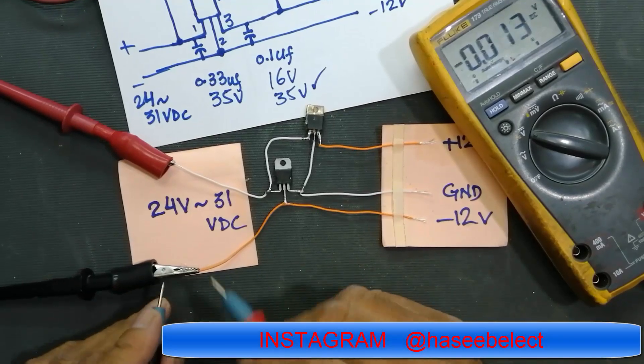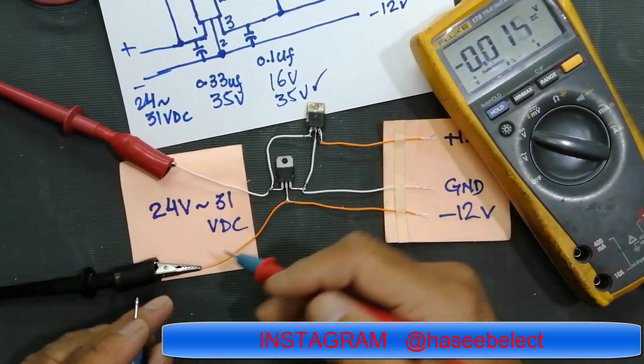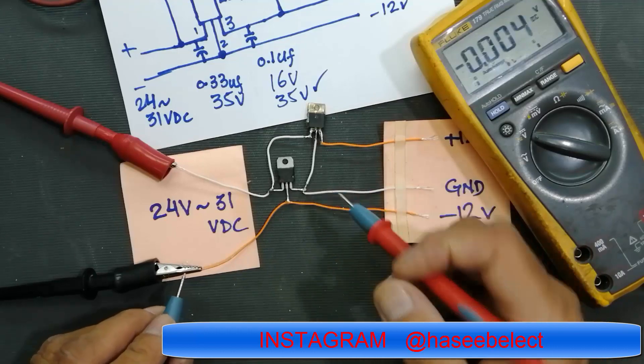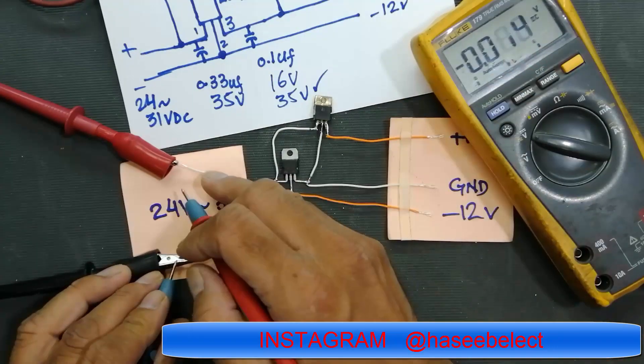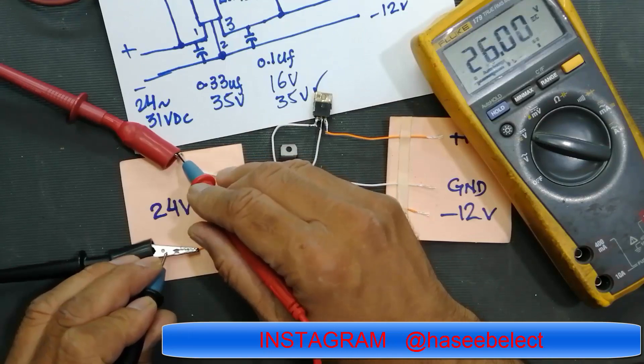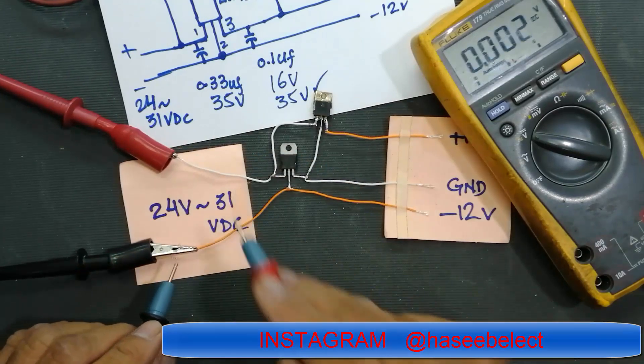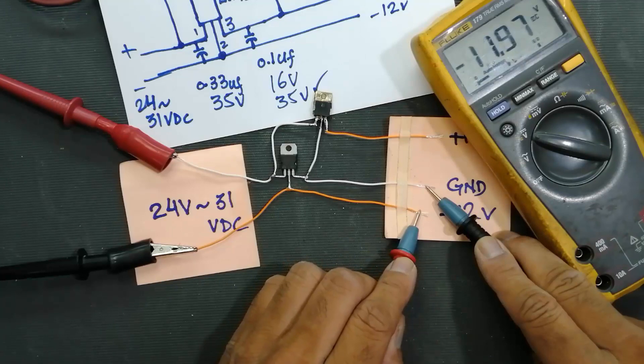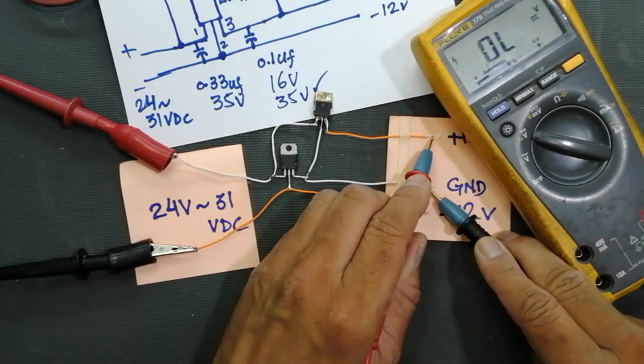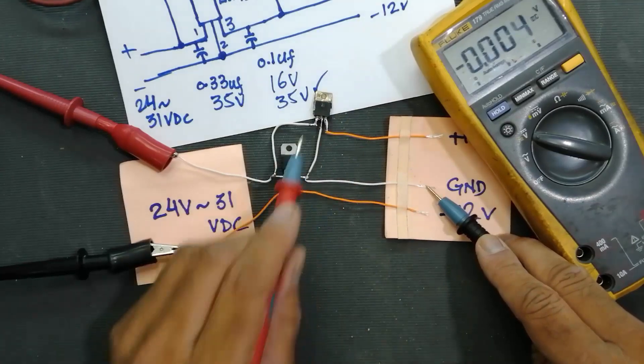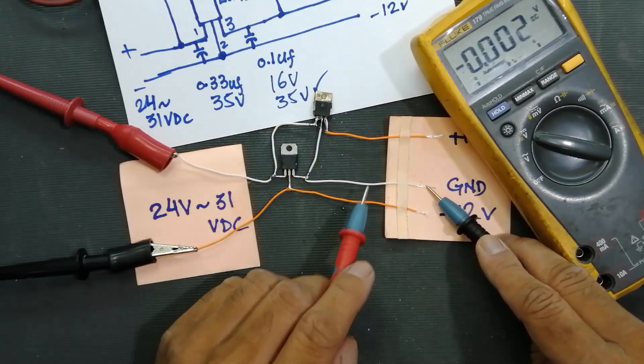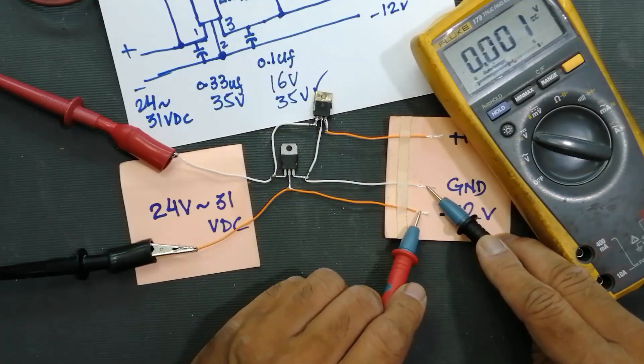Friends, welcome back to my channel. If you have a DC power supply and you want to split it into further sections, how can we split them? Let's see. I have 26 volts here and if I want to split them into minus 12 and plus 12, using this combination we can take minus 12 and plus 12.